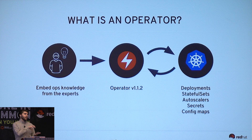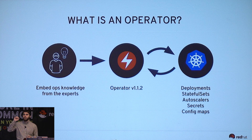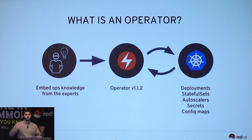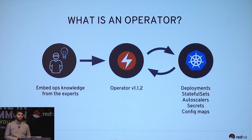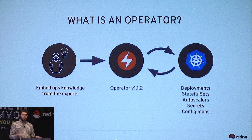You can express that in code so that you don't have a human having to be there. Embedding that ops knowledge into an application is an operator. So you've got version 1.1.2 of your operator; you add some new functionality and put a new version out. It knows how to upgrade from version to version — start this tier first, warm up the cache, or upgrade the database schema before the front end.